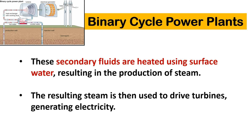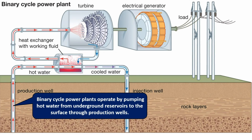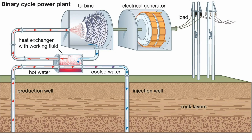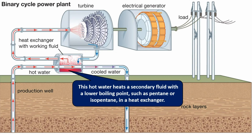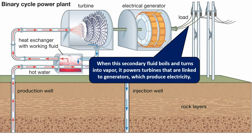The resulting steam is used to drive turbines, generating electricity. Binary cycle power plants operate by pumping hot water from underground reservoirs to the surface through production wells. This hot water heats a secondary fluid with a lower boiling point, such as pentane or isobutane, in a heat exchanger. When this secondary fluid boils and turns into vapor, it powers turbines linked to generators which produce electricity.